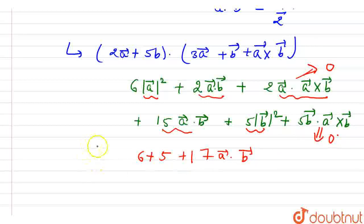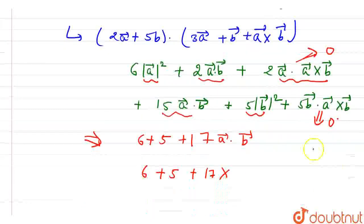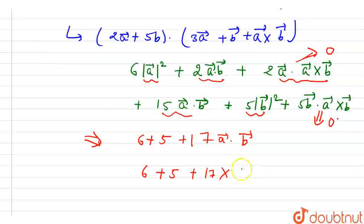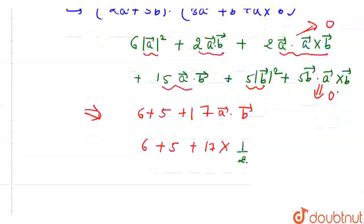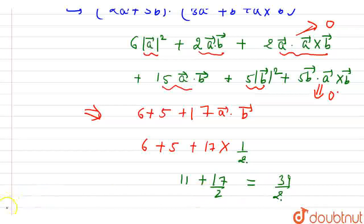So you are left with only 6 plus 5 plus 17 times A dot V. Since the value of A dot V is 1/2, we can write it as 1/2. If you further solve this, you get 11 plus 17 by 2, which is equal to 39 by 2. So this is our final answer of this question. Thank you.